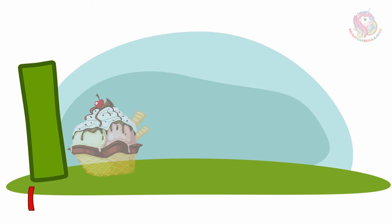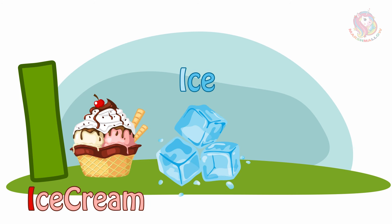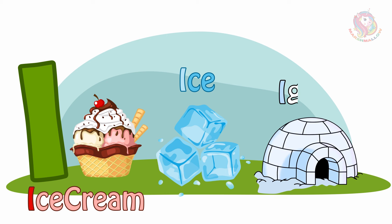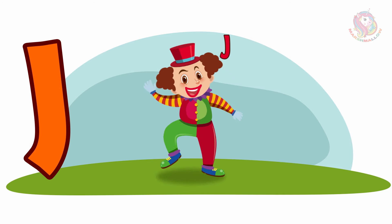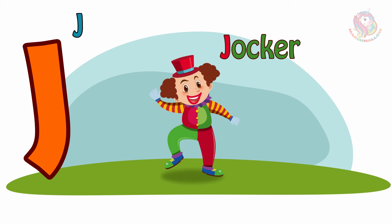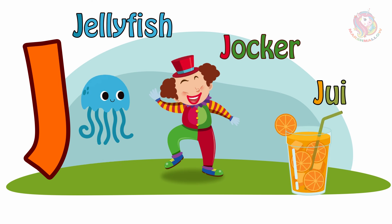I - I is for Ice Cream. I is for Igloo. J - J is for Joker. J is for Jellyfish. J is for Juice.